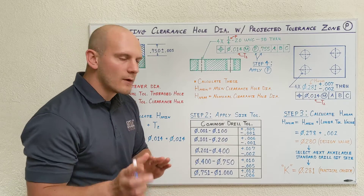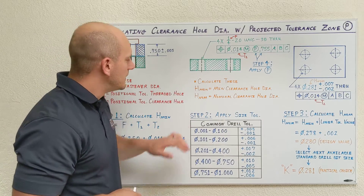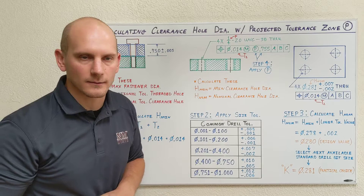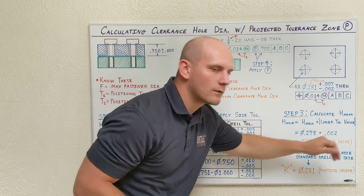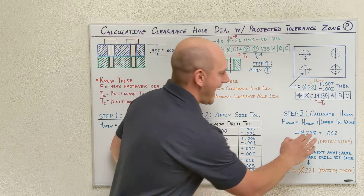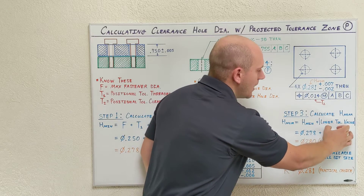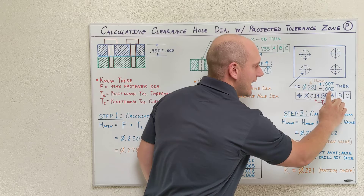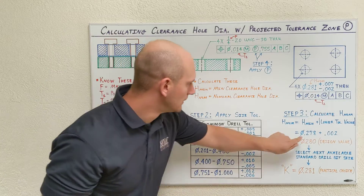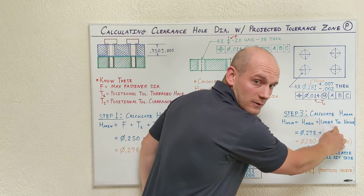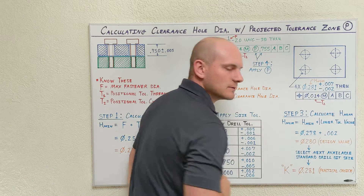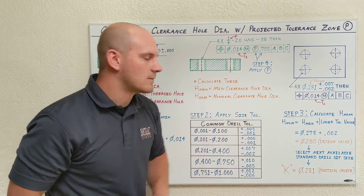Step three: we've already calculated our minimum clearance hole diameter. Now we need to calculate our nominal clearance hole diameter, which we're going to state in our clearance hole call-out. Another very basic formula: take our minimum clearance hole diameter — already calculated — and add the absolute value of our lower tolerance value stated as our size tolerance. Minimum clearance hole diameter 0.278, plus the absolute value of the lower tolerance, 2 thousandths. 0.278 plus 0.002 gives you a nominal diameter of 0.280.